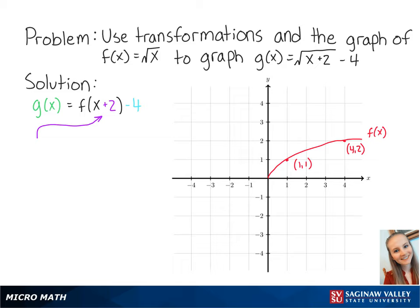Adding 2 to x means that we will shift the graph 2 units to the left. So our new points are at negative 1, 1, and 2, 2. Connecting the points, we get the graph of f of x plus 2.